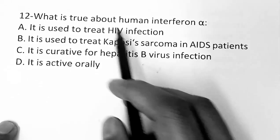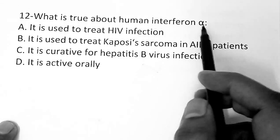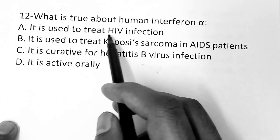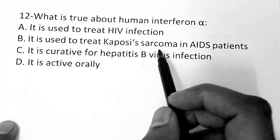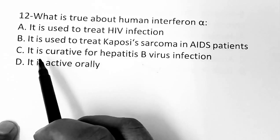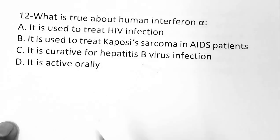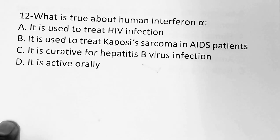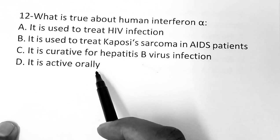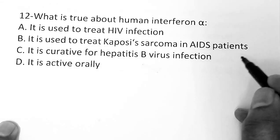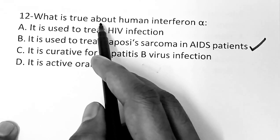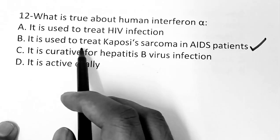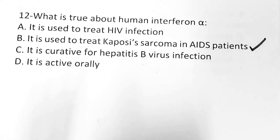Question 12: What is true about human interferon alpha? Option A: useful to treat HIV infection, Option B: useful to treat Kaposi's sarcoma in AIDS patients, Option C: curative for hepatitis B virus infection, Option D: it is active already. The correct answer is Option B — human interferon alpha is used to treat Kaposi's sarcoma in AIDS patients.